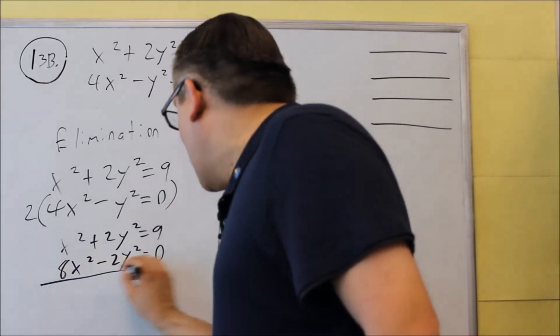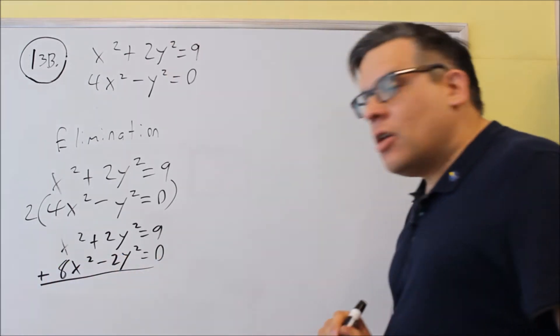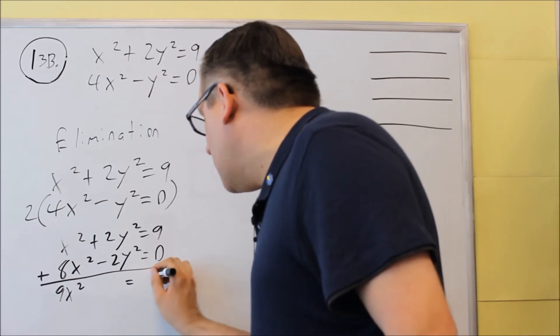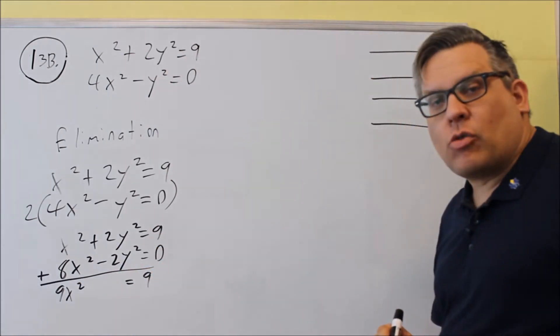And now I'm going to add the equations together. When I add them together, I get 9x squared. This is going to cancel out and give me a zero and I get 9x squared equals nine.